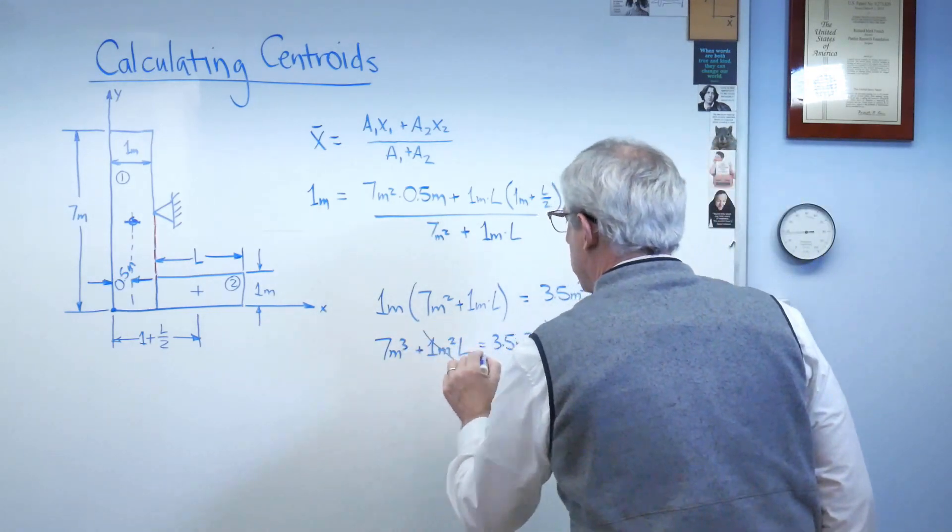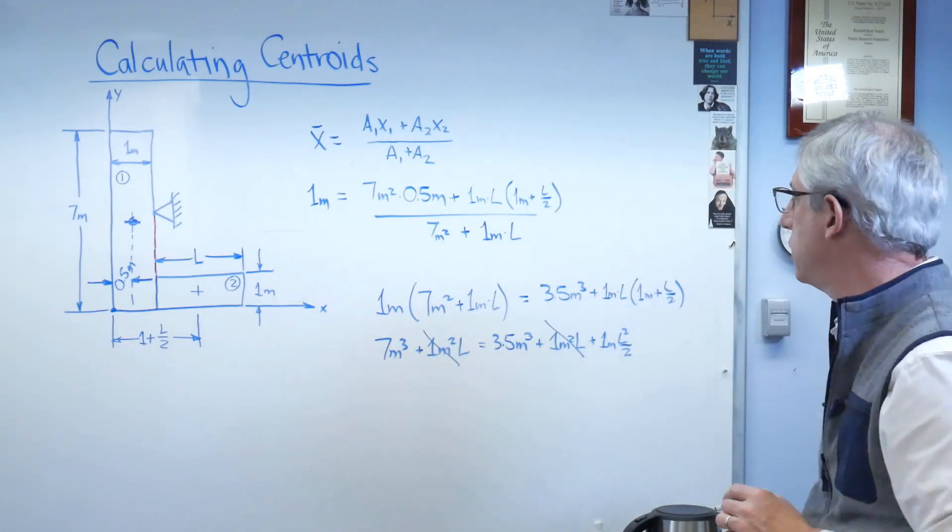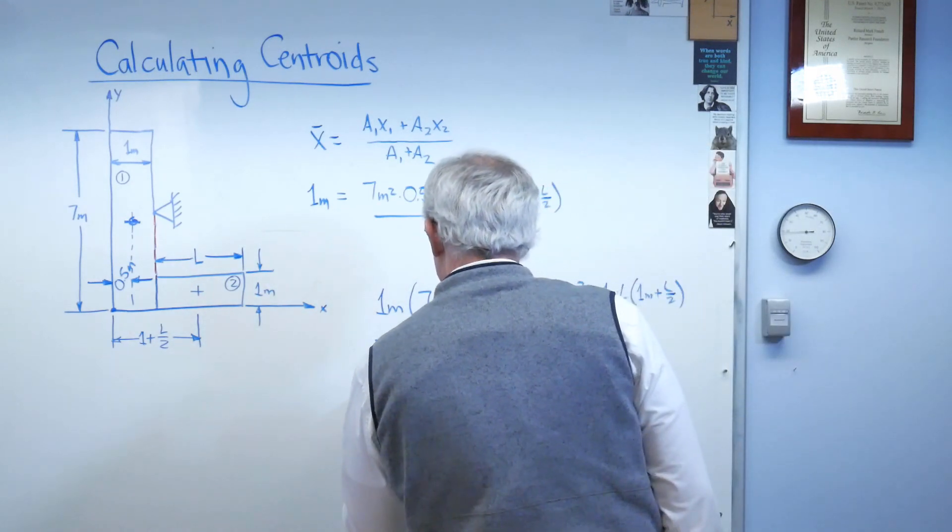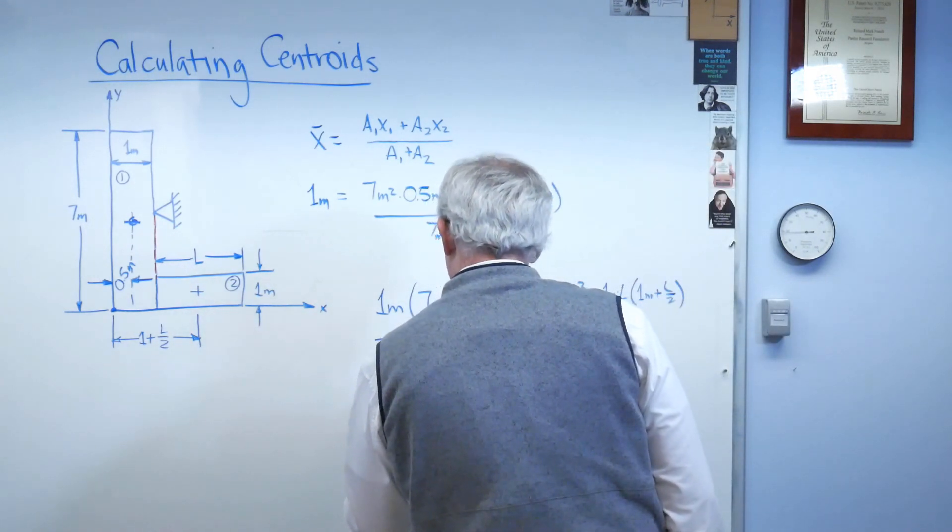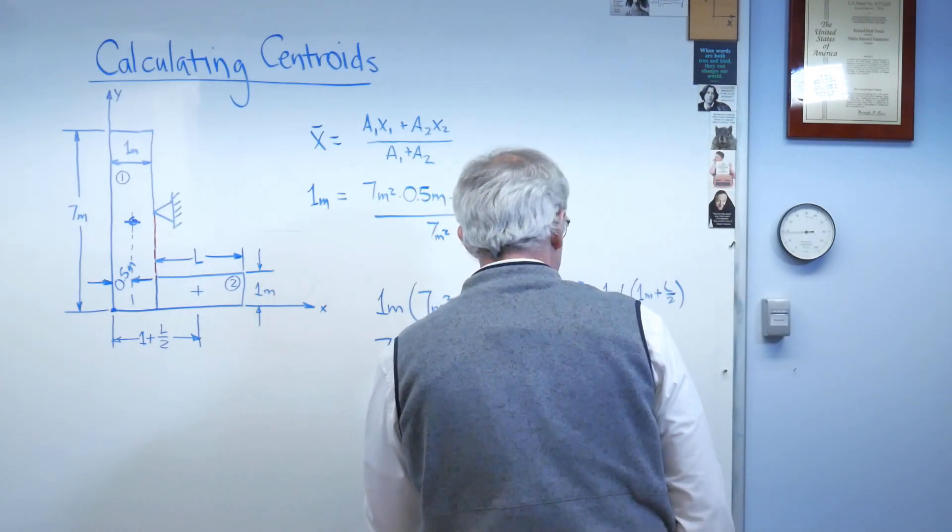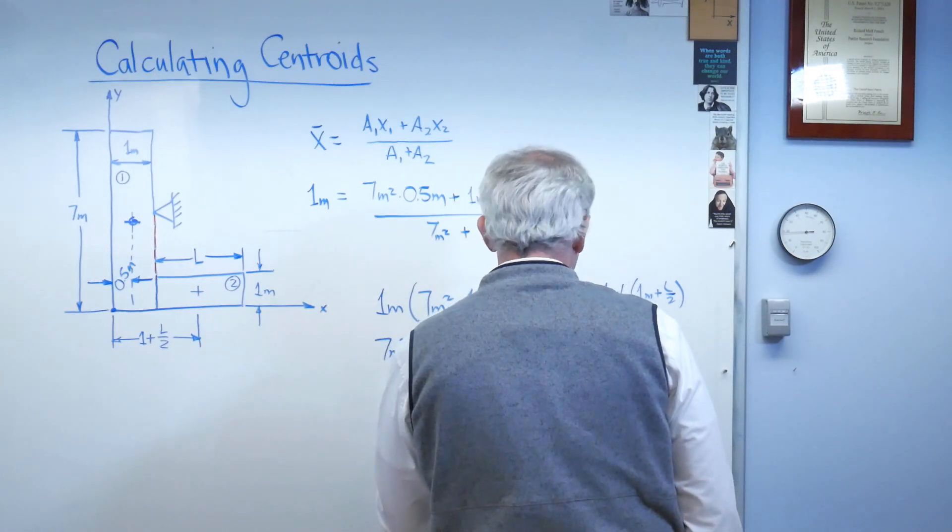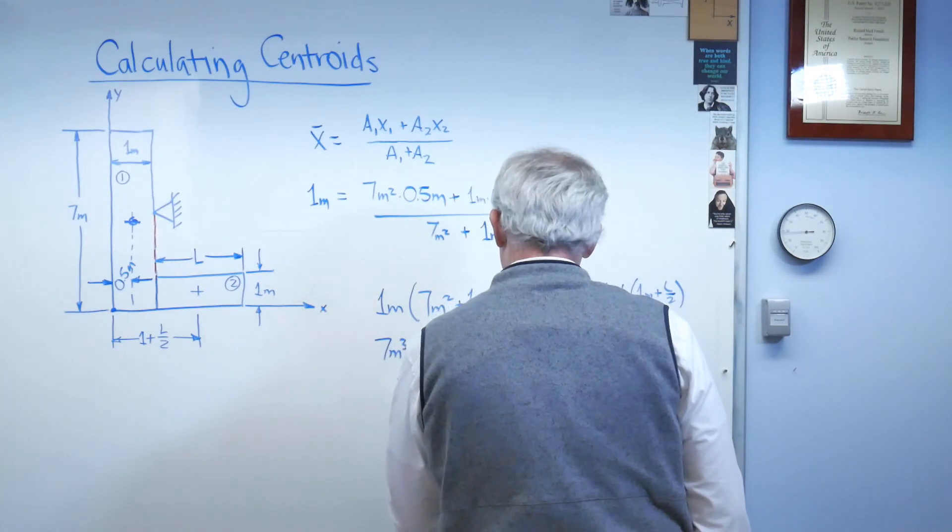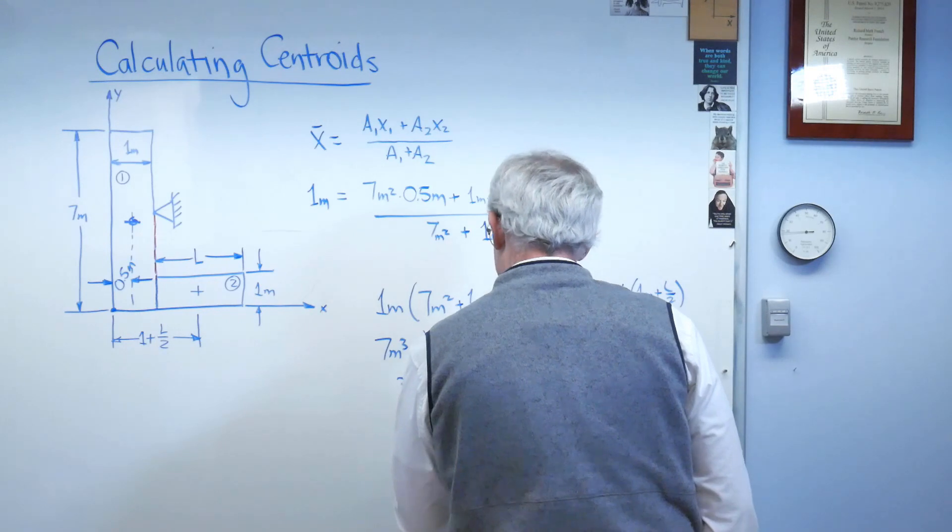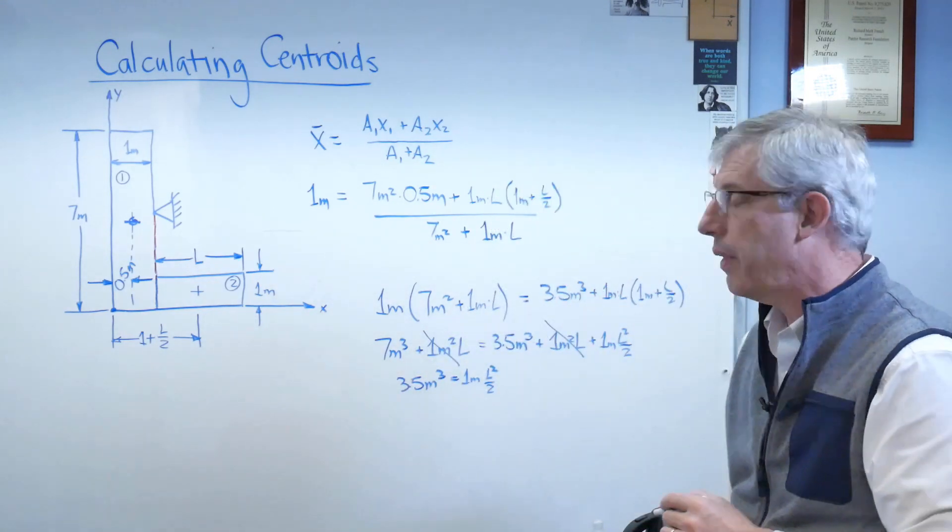Okay, let's subtract that from both sides. So I'm going to get 3.5 meters cubed equals 1 meter times l squared over 2.